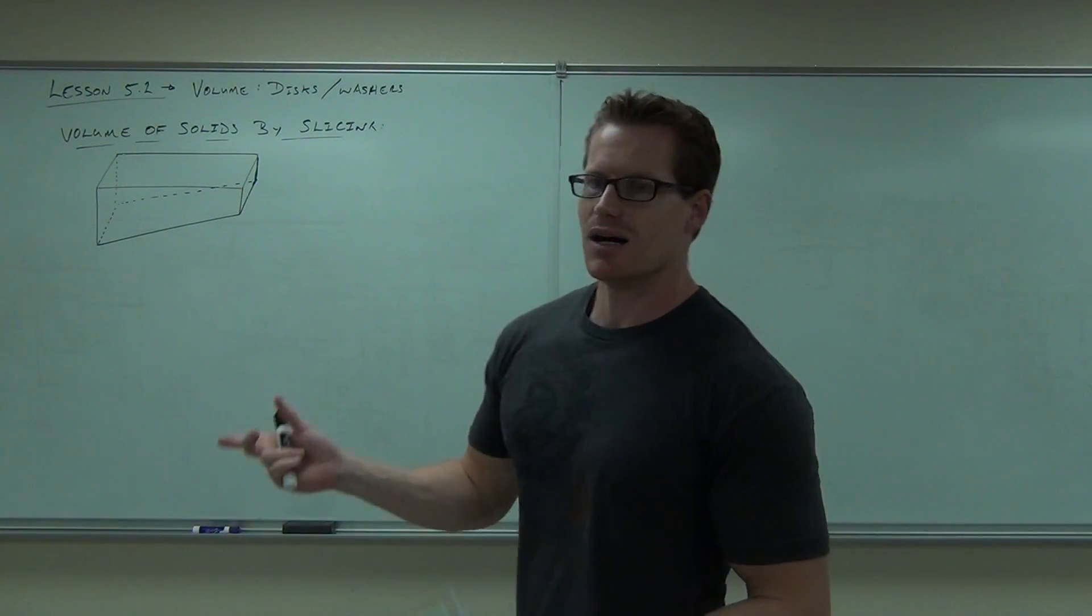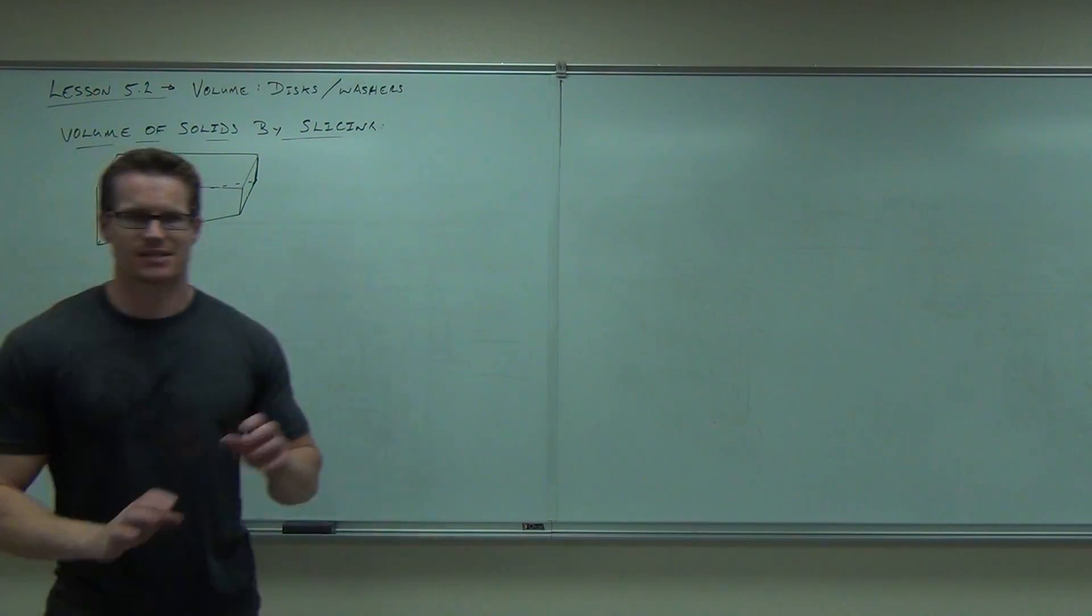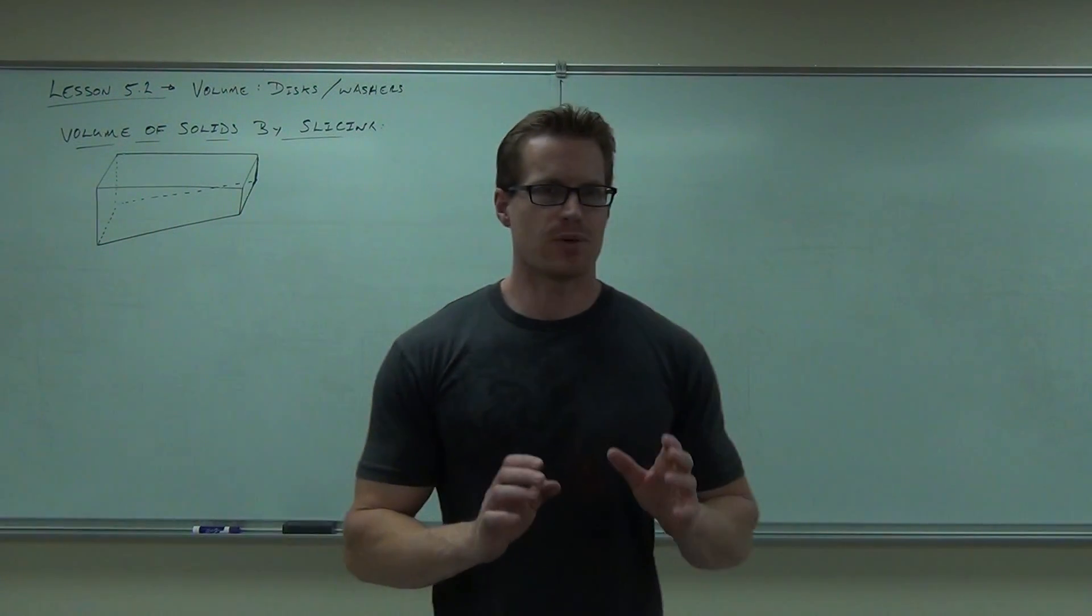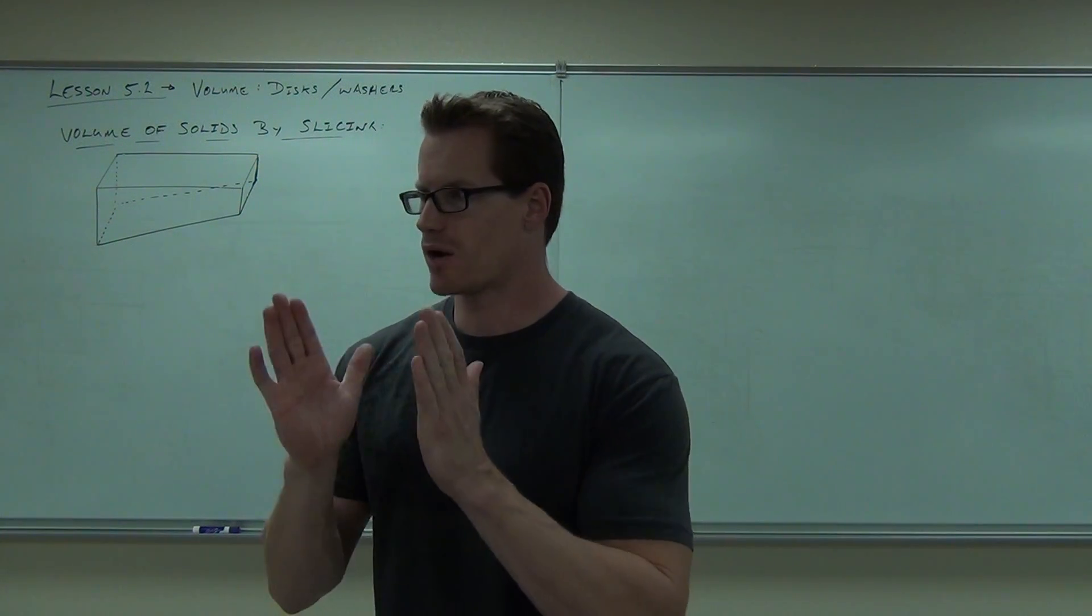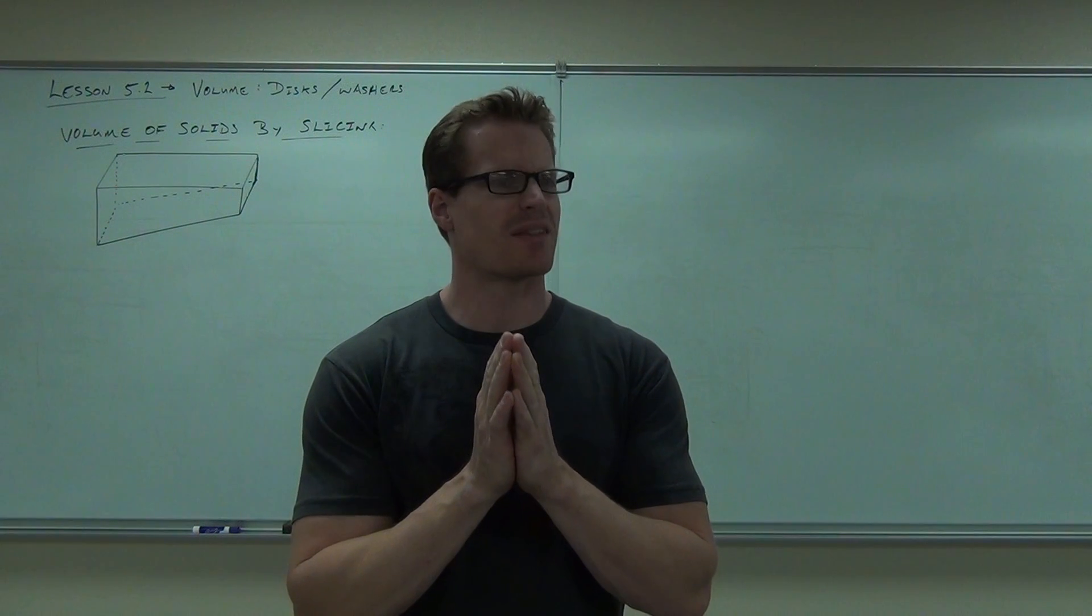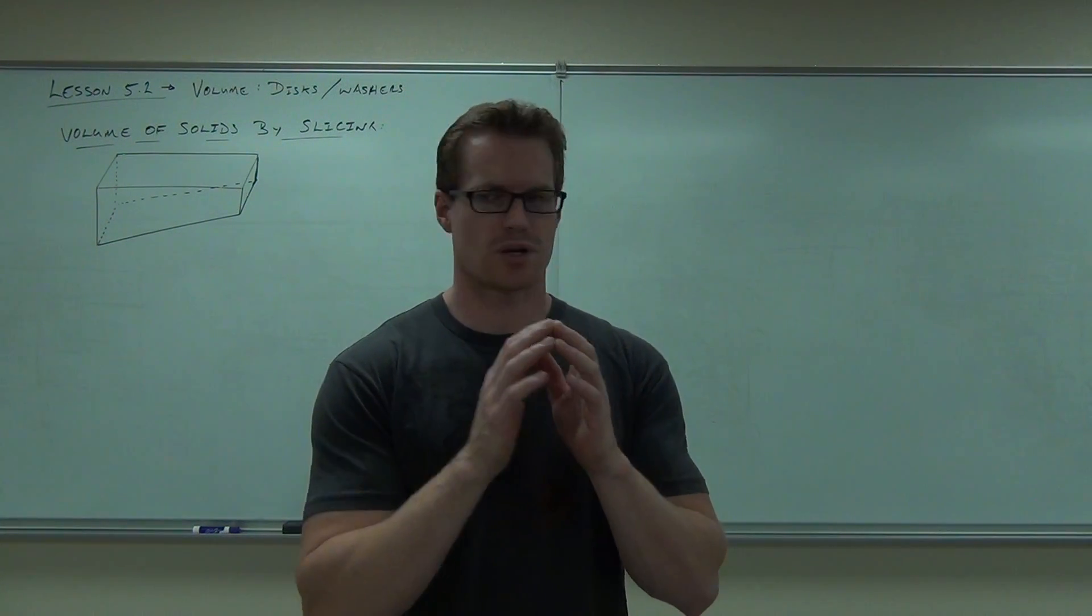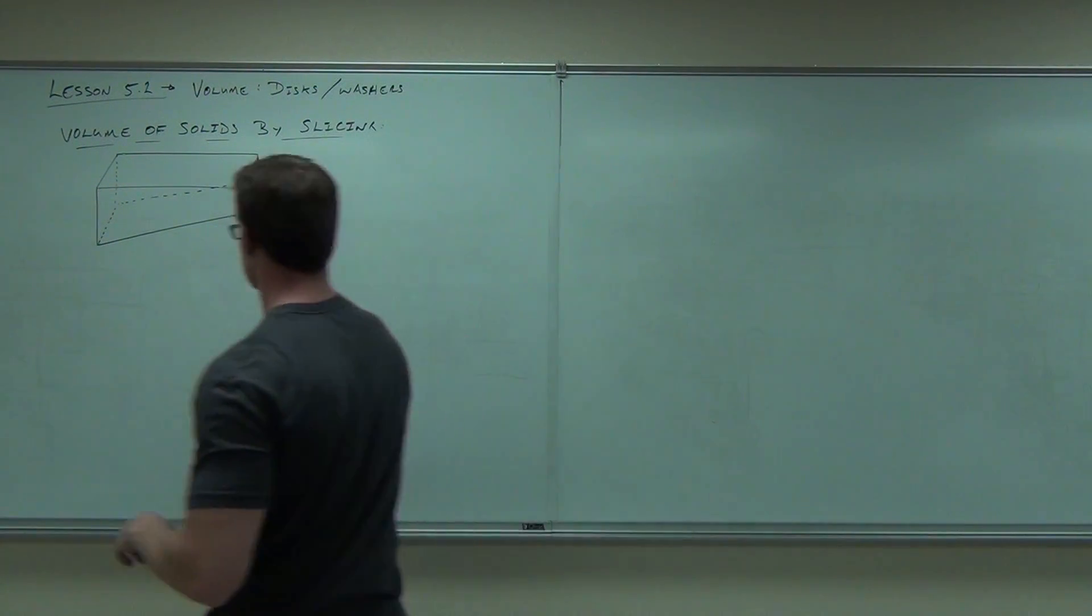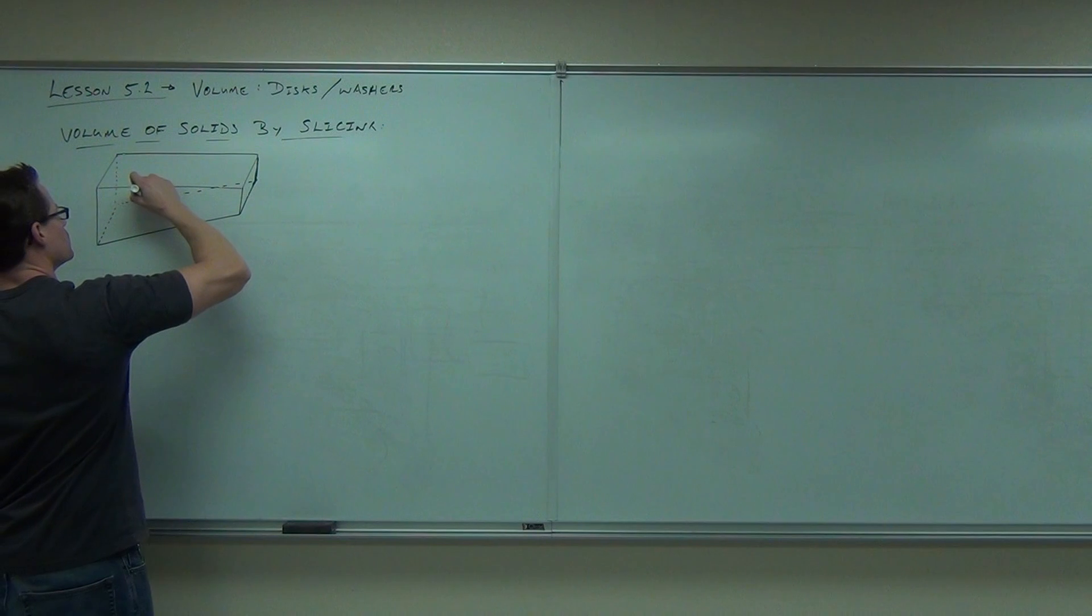Here's the idea. What if we could take and make slices of this thing? If we can find the volume of a slice, then we should be able to add all the slices together and find the volume of the whole figure. Do you see how this parallels the area under a curve idea?